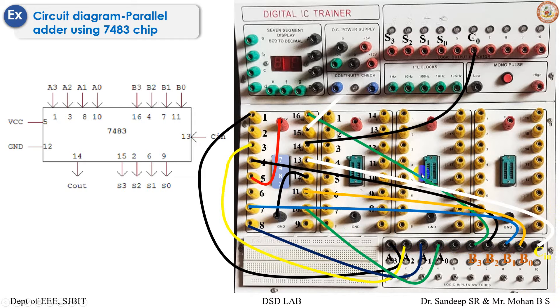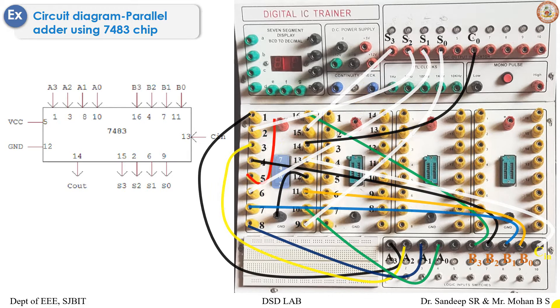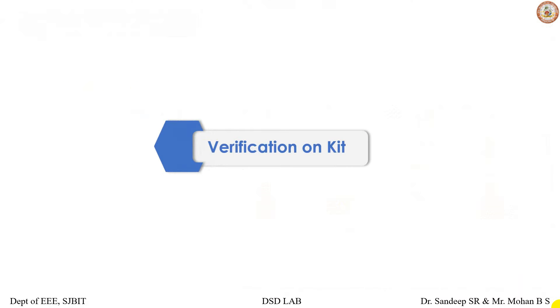The outputs for S3, S2, S1, S0 are respectively pins 15, 2, 6, and 9. So this is the circuit connection to realize a four-bit parallel adder. Let's verify on the kit.